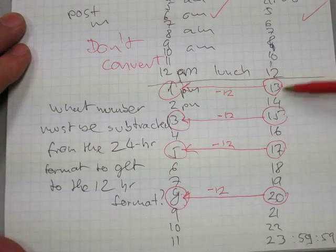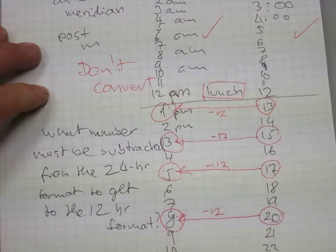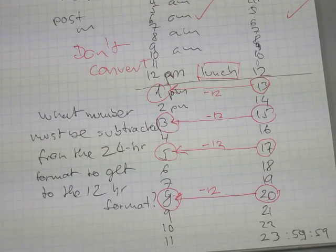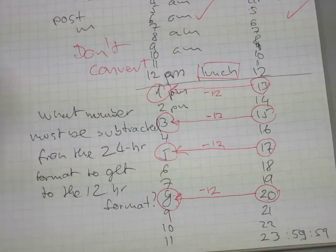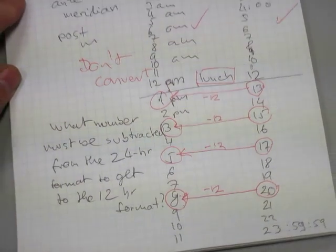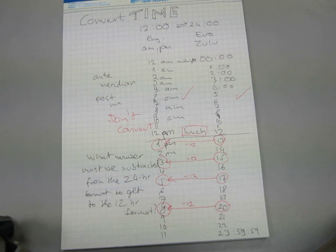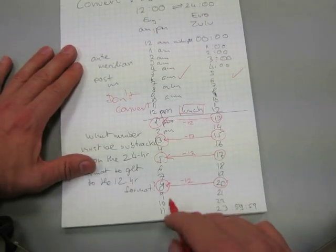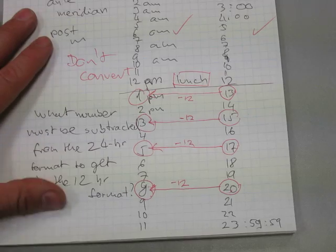After lunch, there is your lunch, there is no changes before lunch, but the numbers after lunch you have to subtract 12 from them. So that's the answer to the question: how do you convert from the 24-hour format to the 12-hour format?